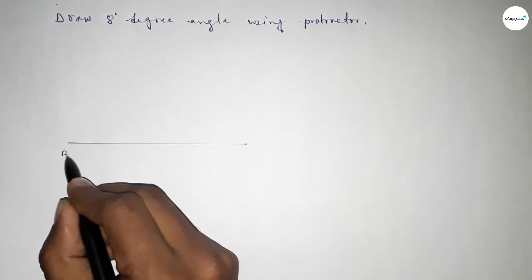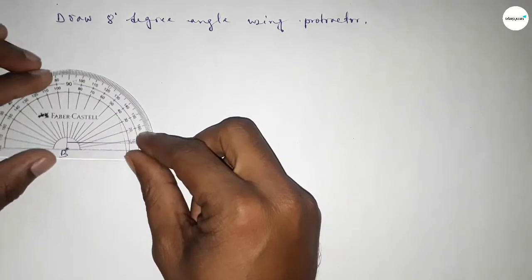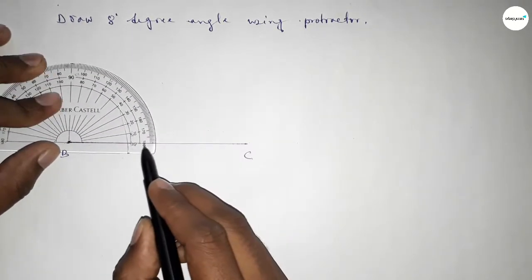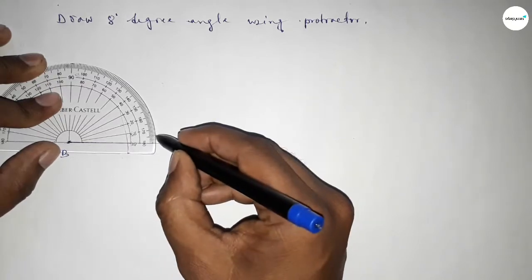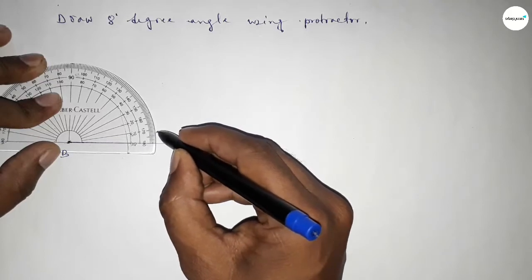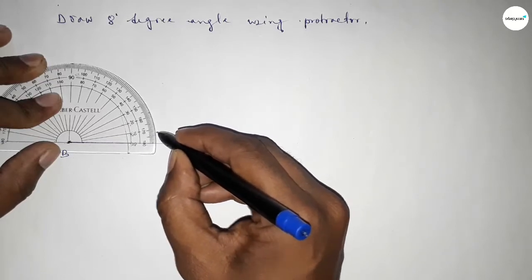of any length, taking here point B and here point C. Now putting the protractor on point B and counting 8 degrees: 0, 1, 2, 3, 4, 5, 6, 7, 8. So this is 8 degrees.